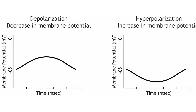There is more than one way to describe a change in membrane potential. If the membrane potential moves toward zero, that is a depolarization because the membrane is becoming less polarized, meaning there is a smaller difference between the charge on the inside of the cell compared to the outside. This is also referred to as a decrease in membrane potential.